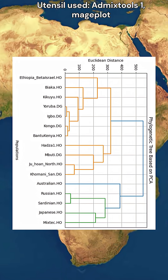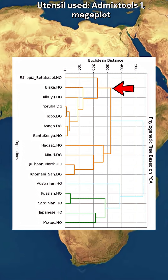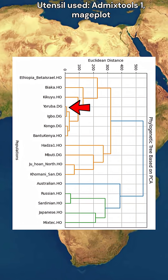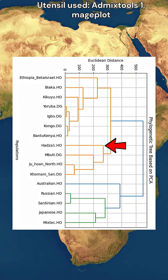According to this tree, there are two distinct clusters of sub-Saharan Africans: the West and East African cluster, which includes such populations as the Yoruba and the Ethiopian Jews, and the South African cluster, which includes such populations as the Hadza, Mbuti pygmies, and the Khoisan.